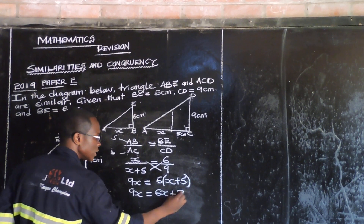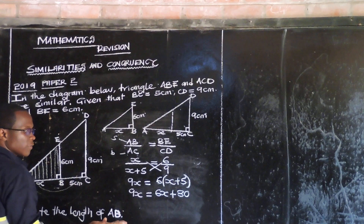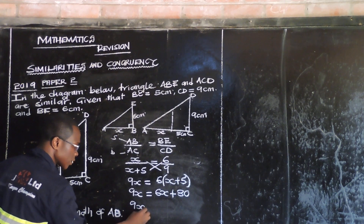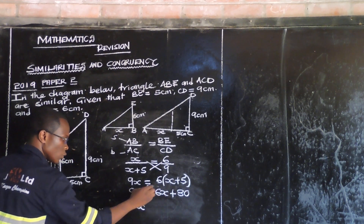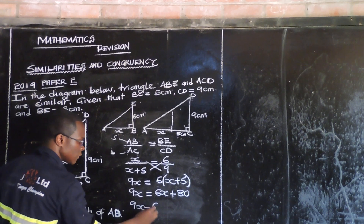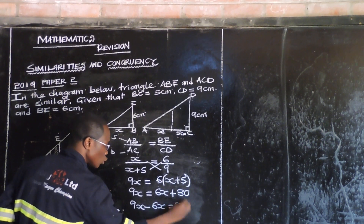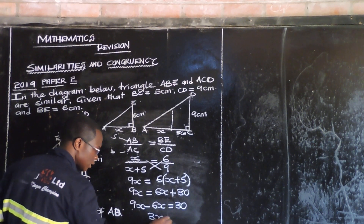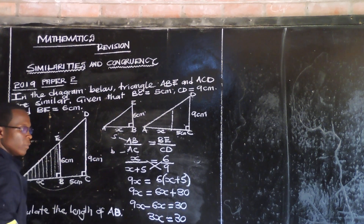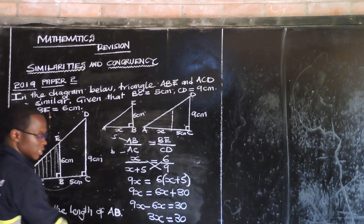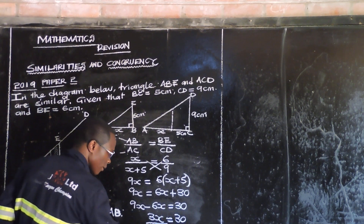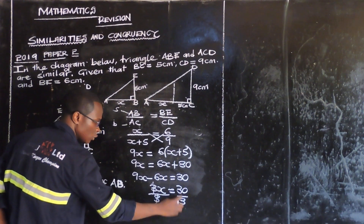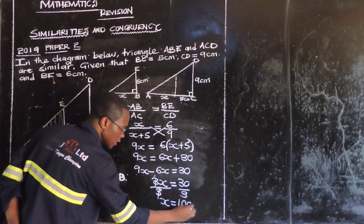So at this level we collect like terms. When 6X transposes, 9X minus 6X gives us 3X, which is equal to 30. To find X, we divide both sides by the coefficient of X, which is 3. So X equals 10 centimeters.